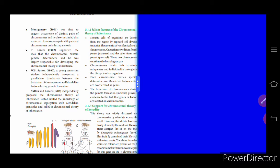Montgomery suggested the occurrence of distinct pairs of chromosomes and concluded that the maternal chromosome pairs with the paternal chromosome only during meiosis. T. Boveri supported the idea that the chromosome contains genetic determinants and was largely responsible for developing the chromosomal theory of inheritance. Then certain young American students independently recognized a parallelism — a similarity — between the behavior of chromosomes and Mendelian factors during gamete formation.